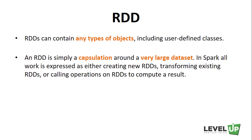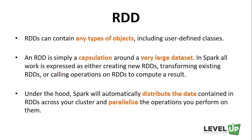In Spark, all work is expressed as either creating new RDDs, transforming existing RDDs, or calling operations on RDDs to compute a result. Under the hood, Spark will automatically distribute the data contained in RDDs across your cluster and parallelize the operations you perform on them.